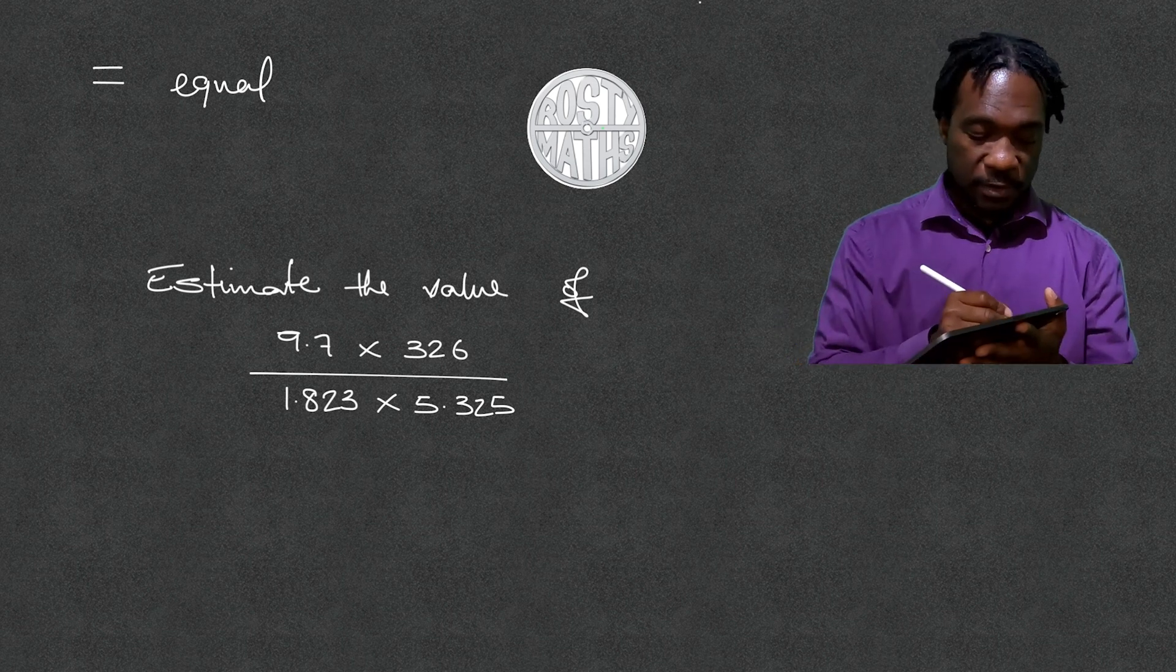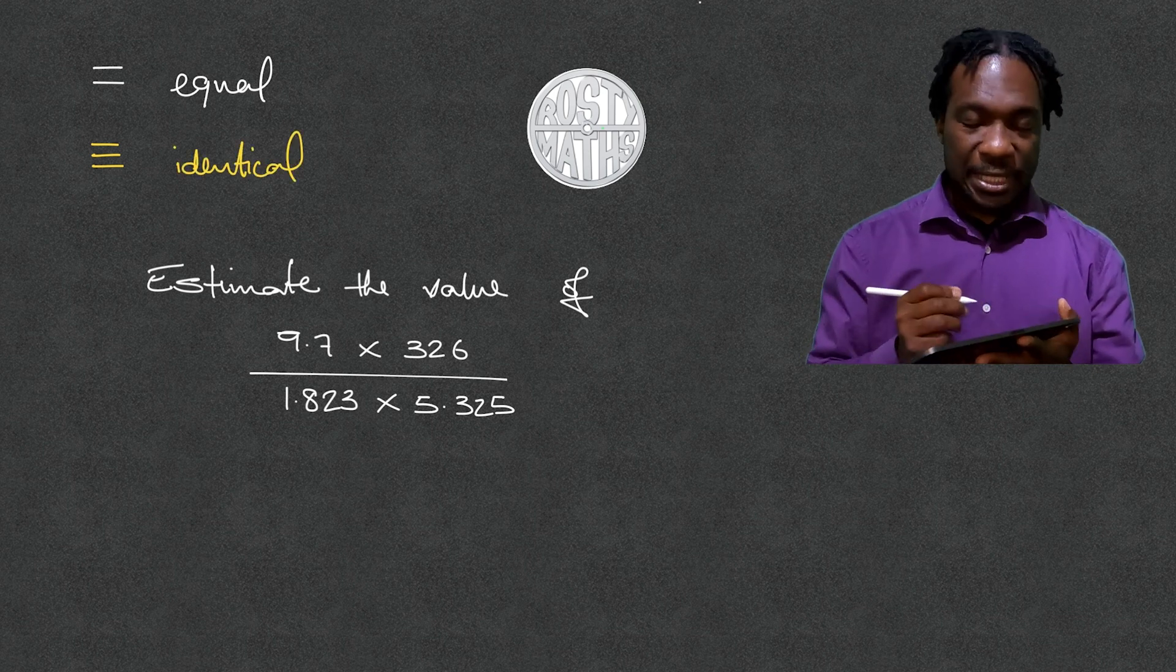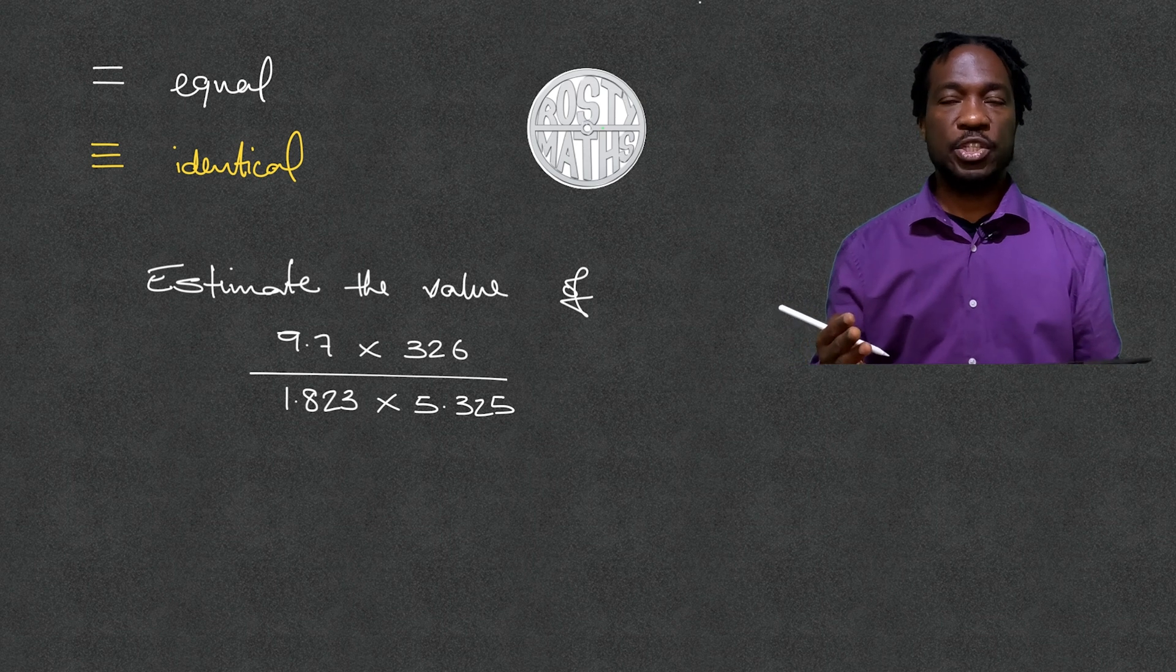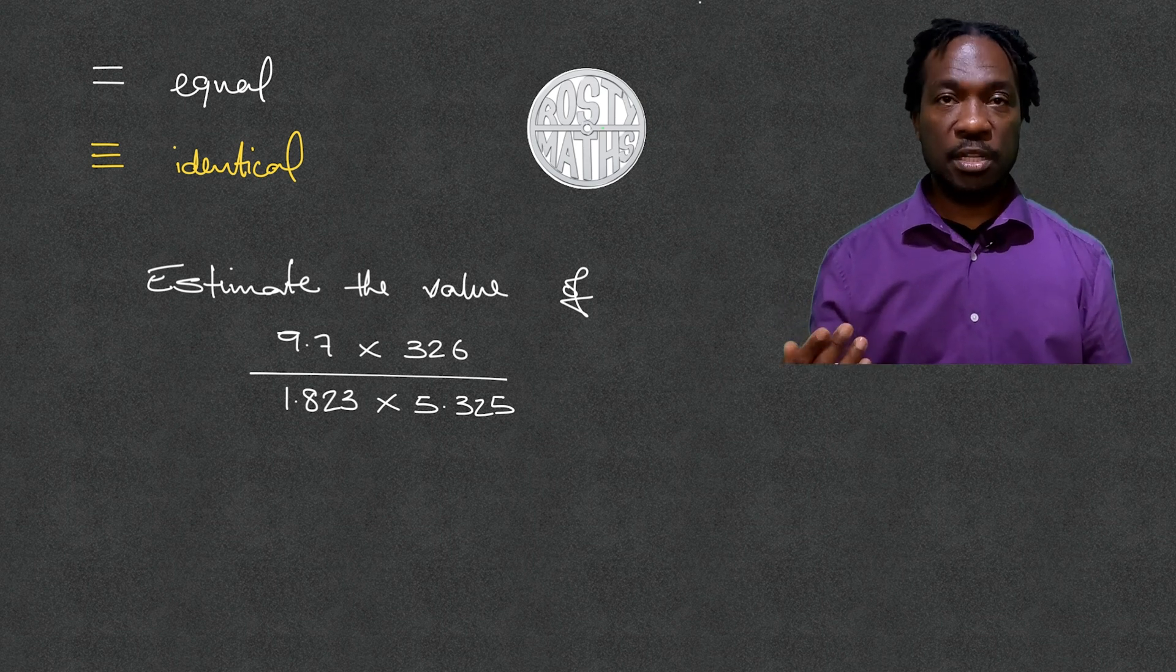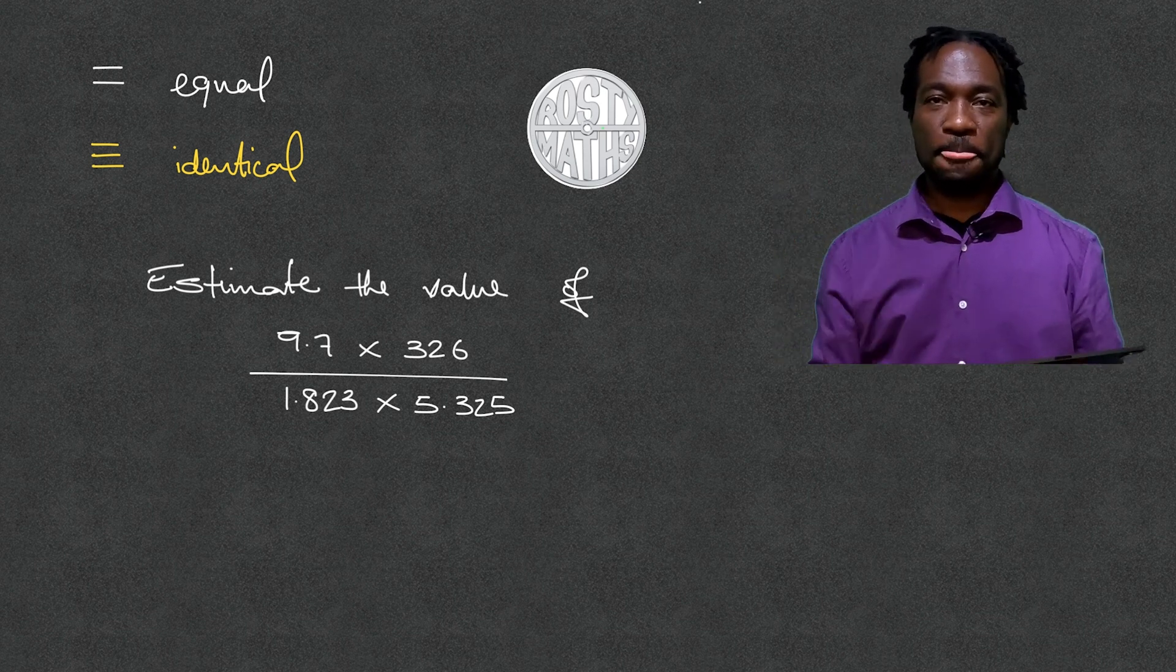The other type of equal sign we've used before is with three lines like this, and this means identical. We tend to use this when looking at questions in algebra where you're looking at algebraic proof, where one side is identical to the other side.